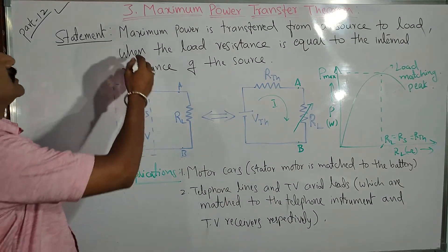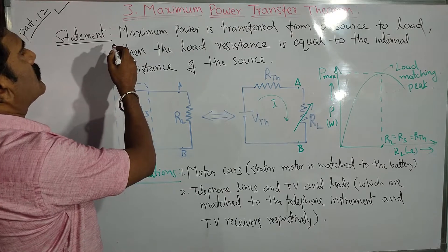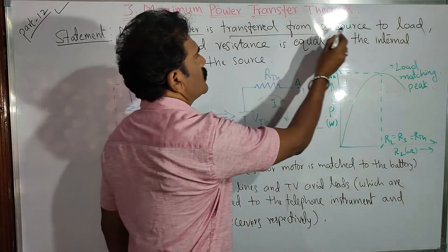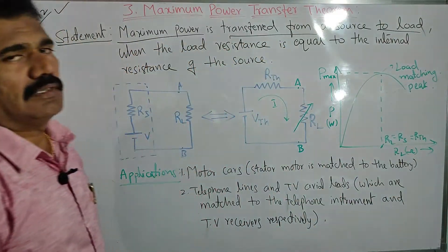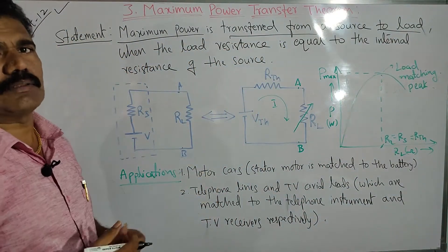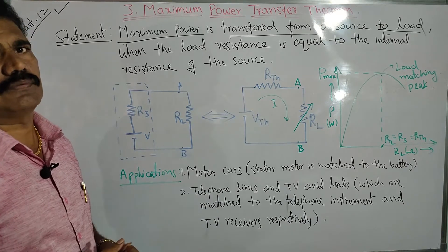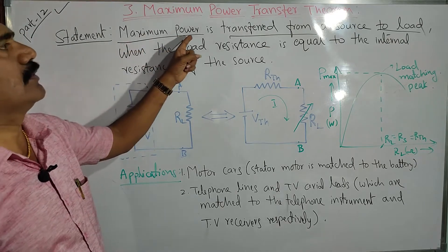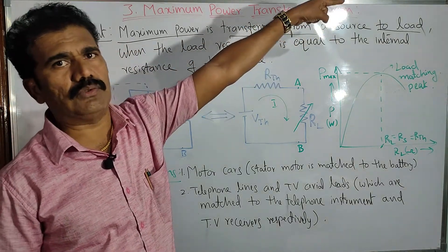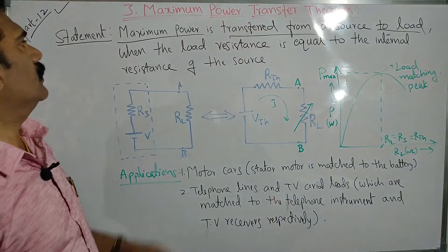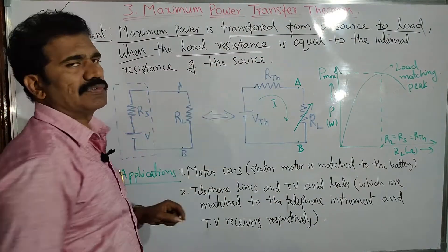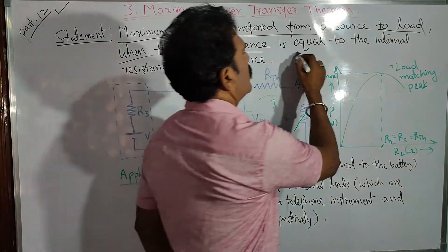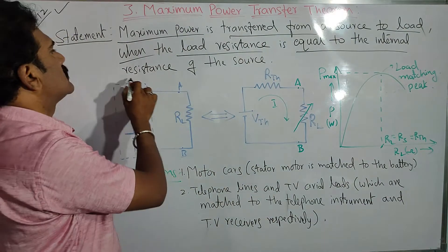It is a very simple theorem. The Maximum Power Transfer Theorem states that maximum power is transferred from a source to a load — that means, how we can extract the maximum power from the source. Maximum power can be transferred from a given source to the connected load when the load resistance is equal to the internal resistance of the source.